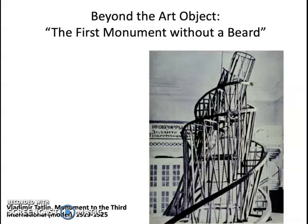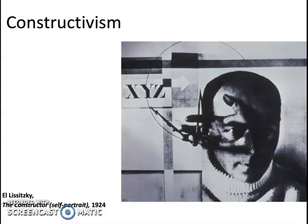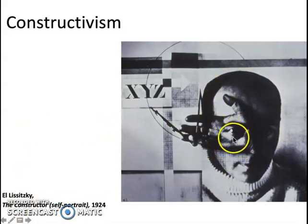Tatlin, with his Monument to the Third International, seemed to be proposing that there would be an altogether new way of approaching the task of making. The Russian avant-garde in the 1920s would think of itself as doing constructivism, not making art. Lissitzky makes a brilliant photo montage of himself as the Constructor, with his photograph face superimposed with his hand connecting with his eye — mind and hand working together with the compass.